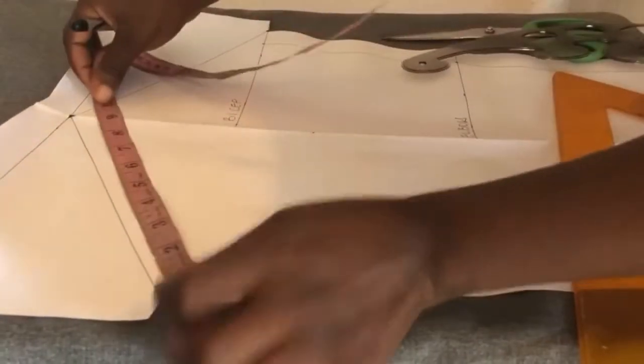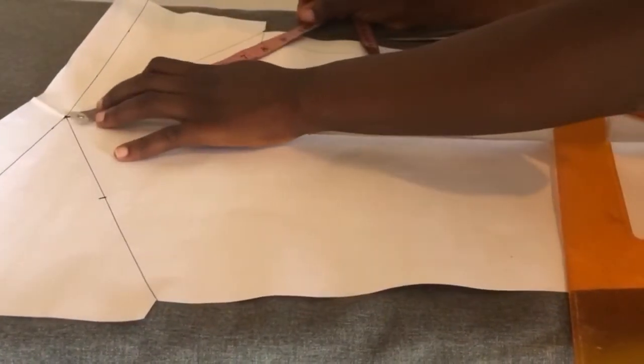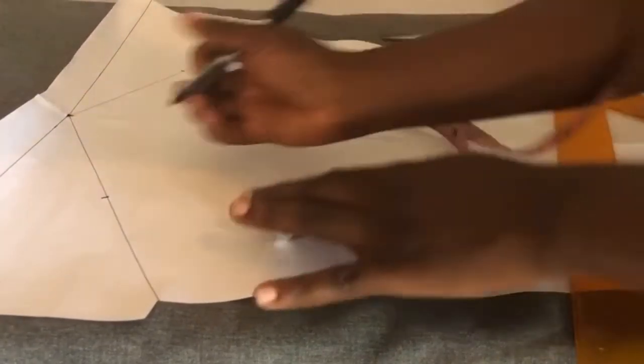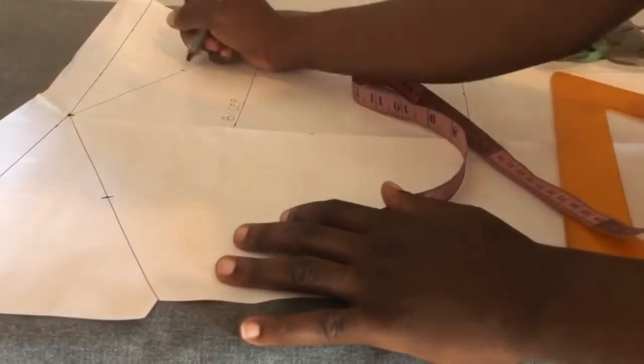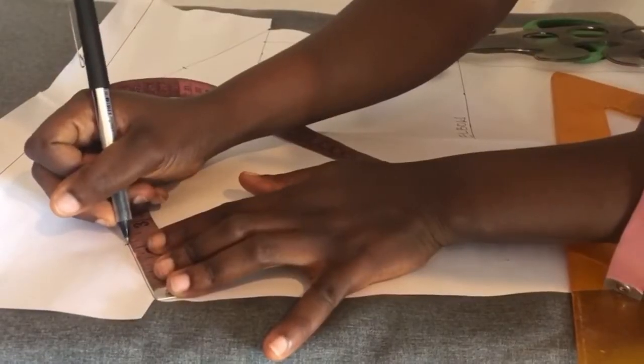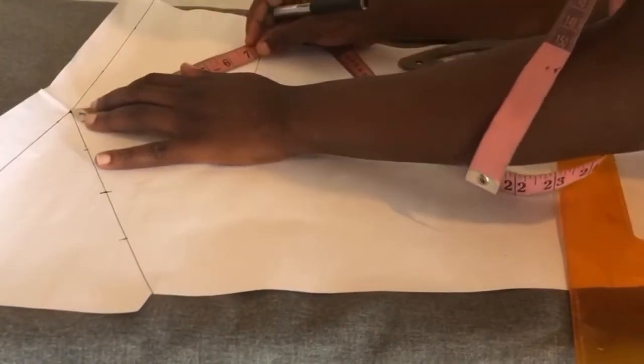So I'll mark half of this line. I'll do the same on the second side too. From this half mark, I'll divide it into two again. I'll do the same here.